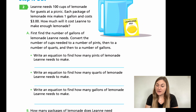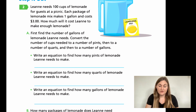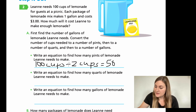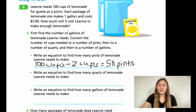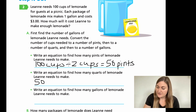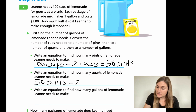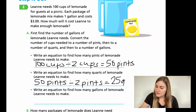Great job. Let's go ahead and solve this. For A, it says write an equation to find how many pints of lemonade — using my sheet, there are two cups for every one pint. So I'm starting with my total 100 cups and dividing by two cups to get into pints. One hundred divided by two is 50 pints. Then I use that new 50 pints and go into quarts — there are two pints for every one quart, so I divide by two again. Fifty pints divided by two is 25 quarts.